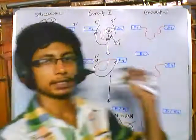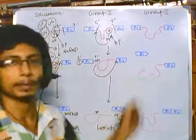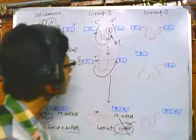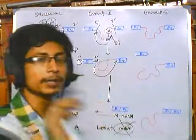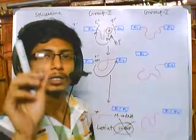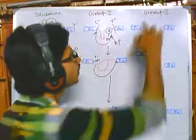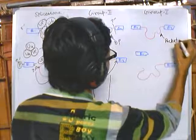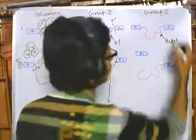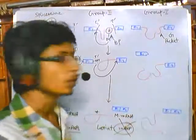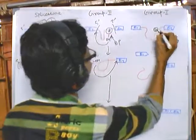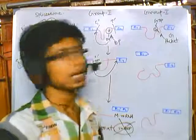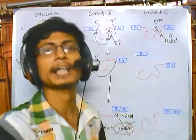The third kind — Group 1 splicing — is something we haven't talked about yet. This is also self-splicing, meaning it does not require snRNPs. But in the case of both spliceosome-mediated and Group 2 splicing, we have a branch point where adenine supplies a hydroxyl. In Group 1 introns, however, there is no branch point. Instead, there is a pocket called the guanosine-binding pocket, or G pocket. Guanosine triphosphate (GTP) comes in and binds to this G pocket.